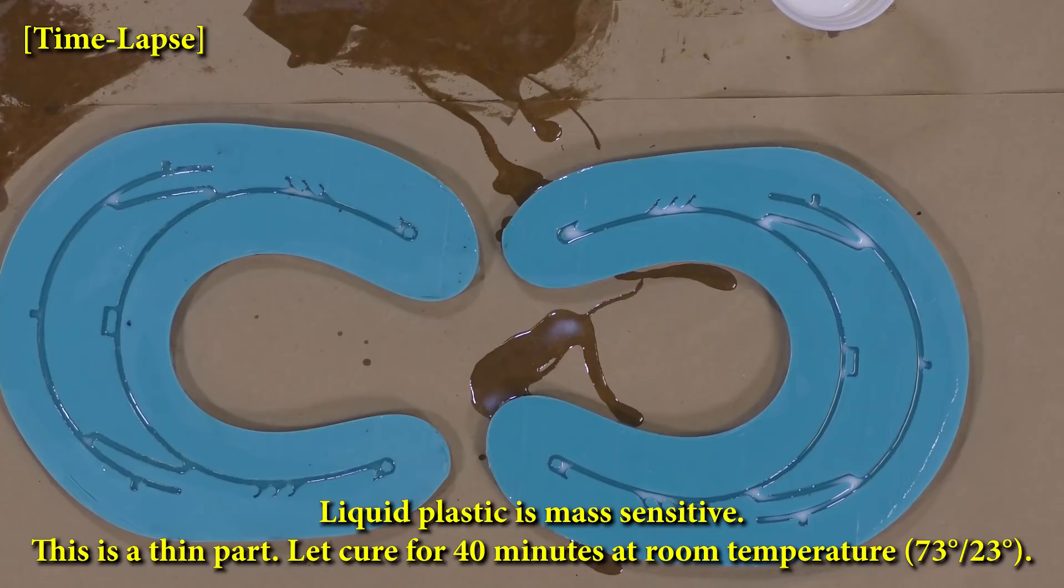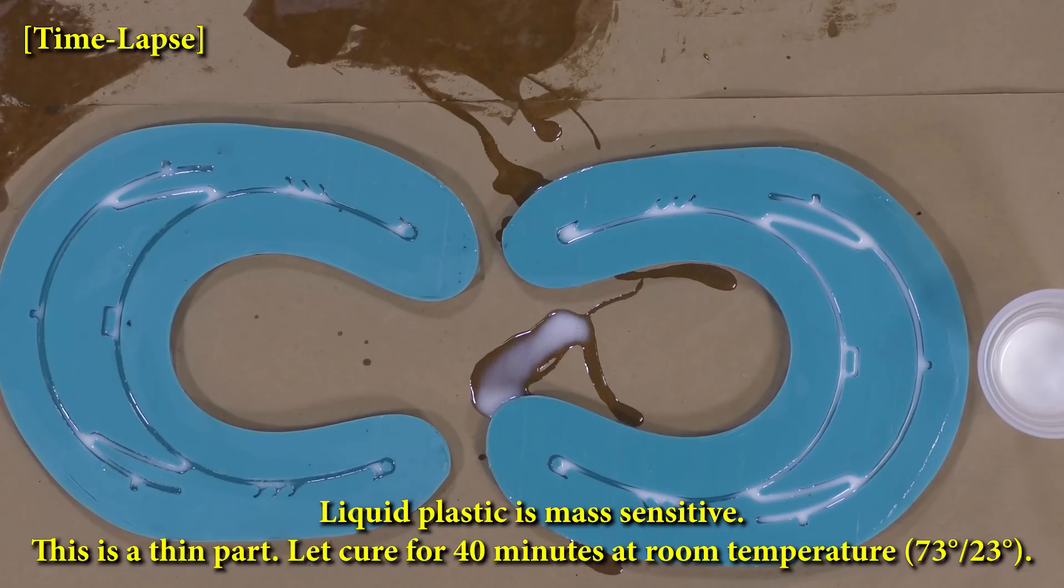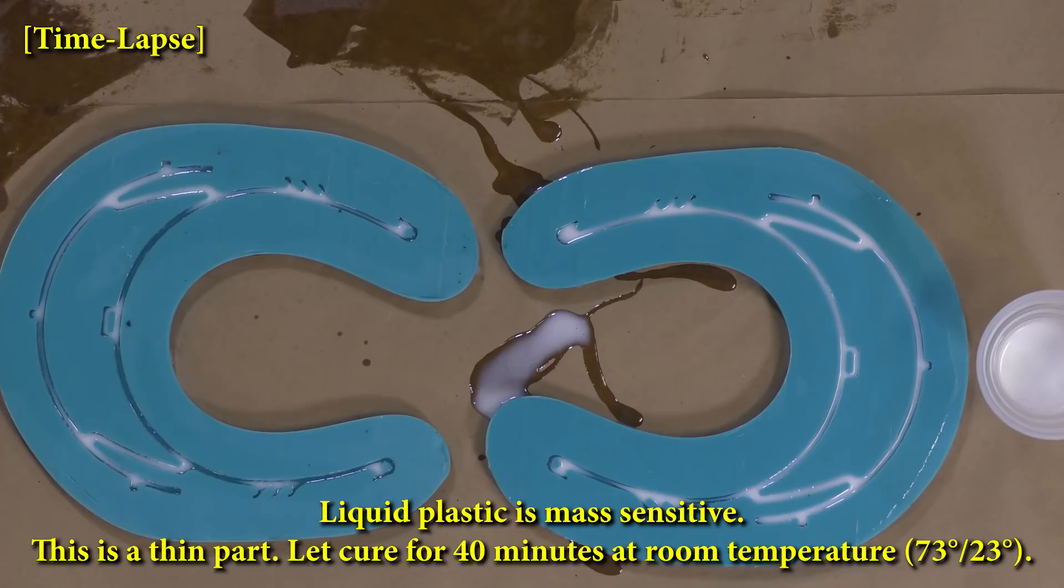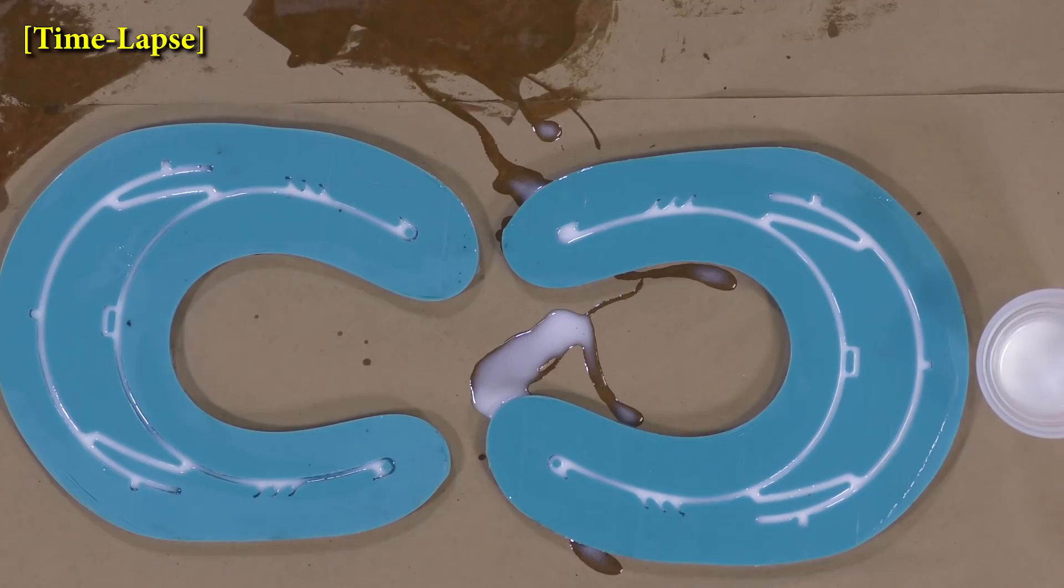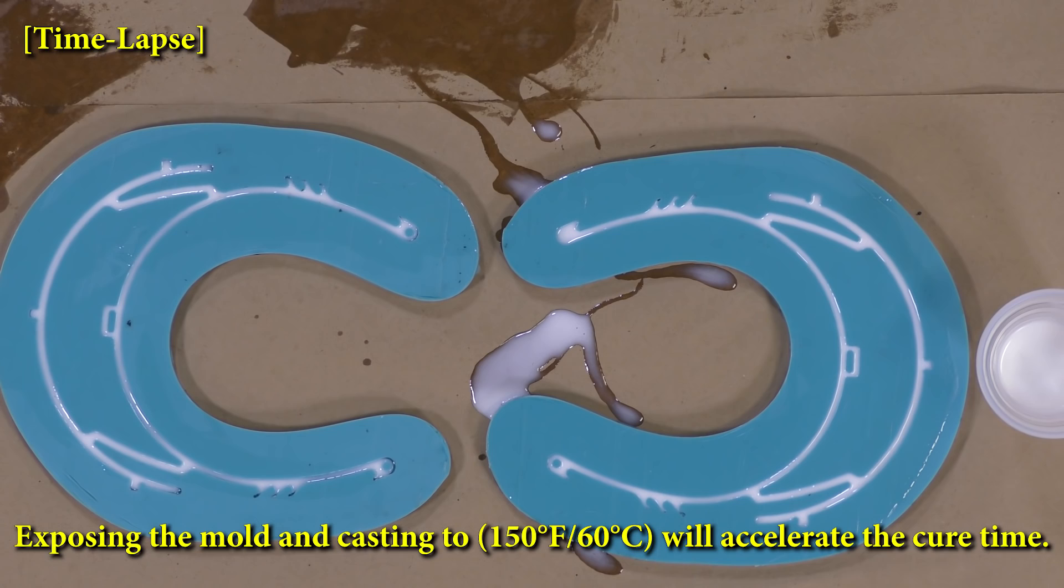Liquid plastics such as the SmoothCast 65D are mass sensitive. What that means is that the more material you have, the faster it will set up. Since this is a very small part, a thin part, it's going to take longer for that mass to heat up. So we're going to let this cure for 40 minutes at room temperature of 73 Fahrenheit. Keep in mind that a little bit of extra heat will shorten that cure time quite a bit.